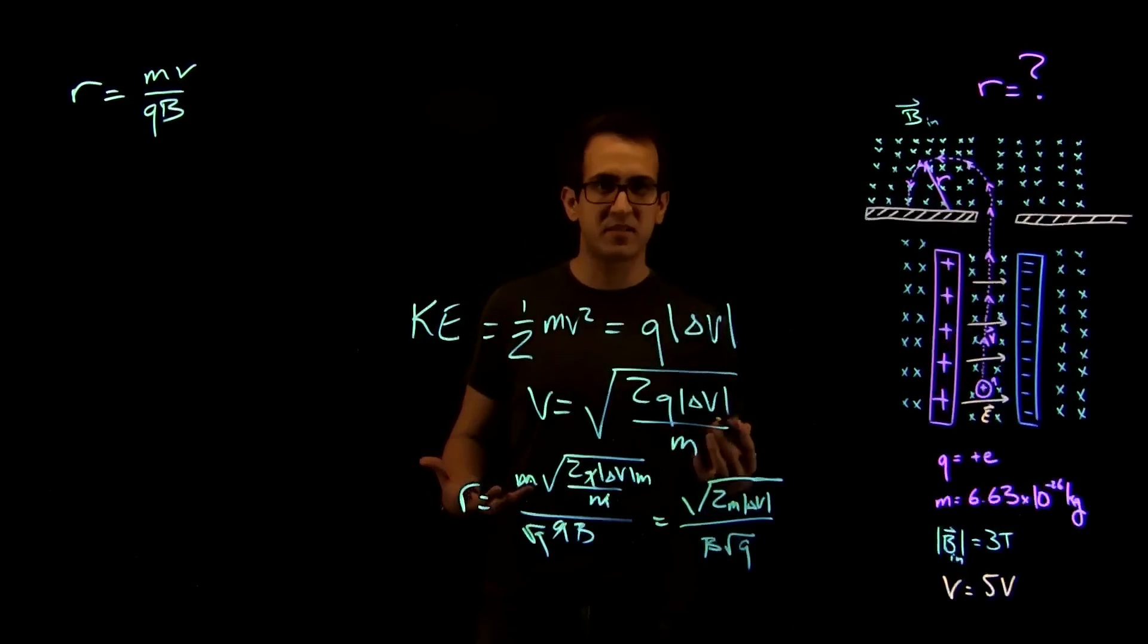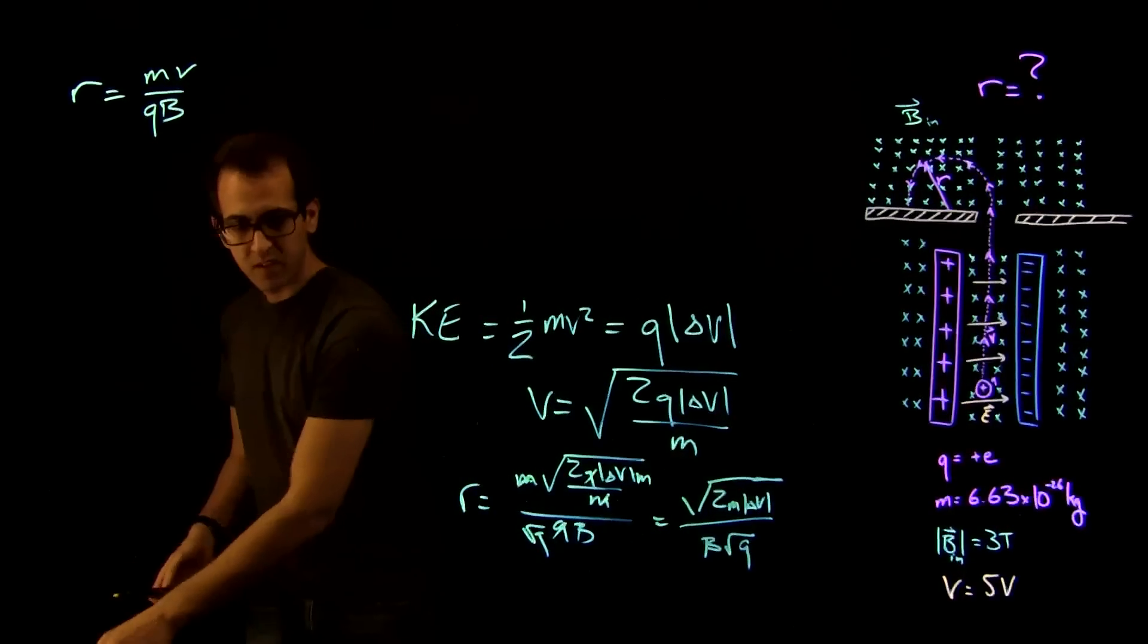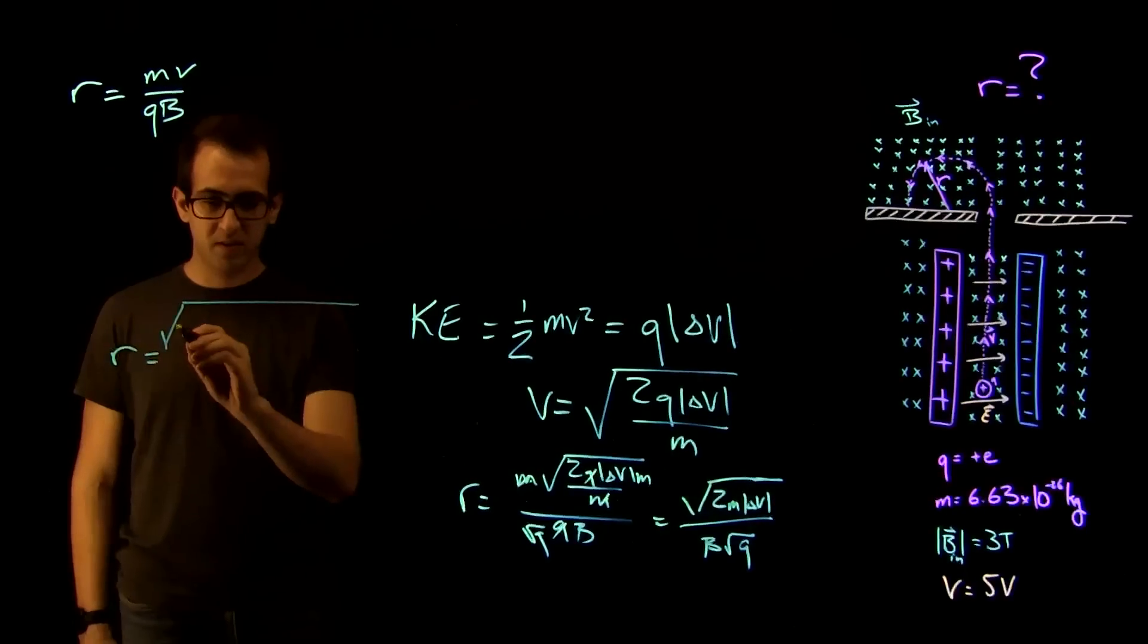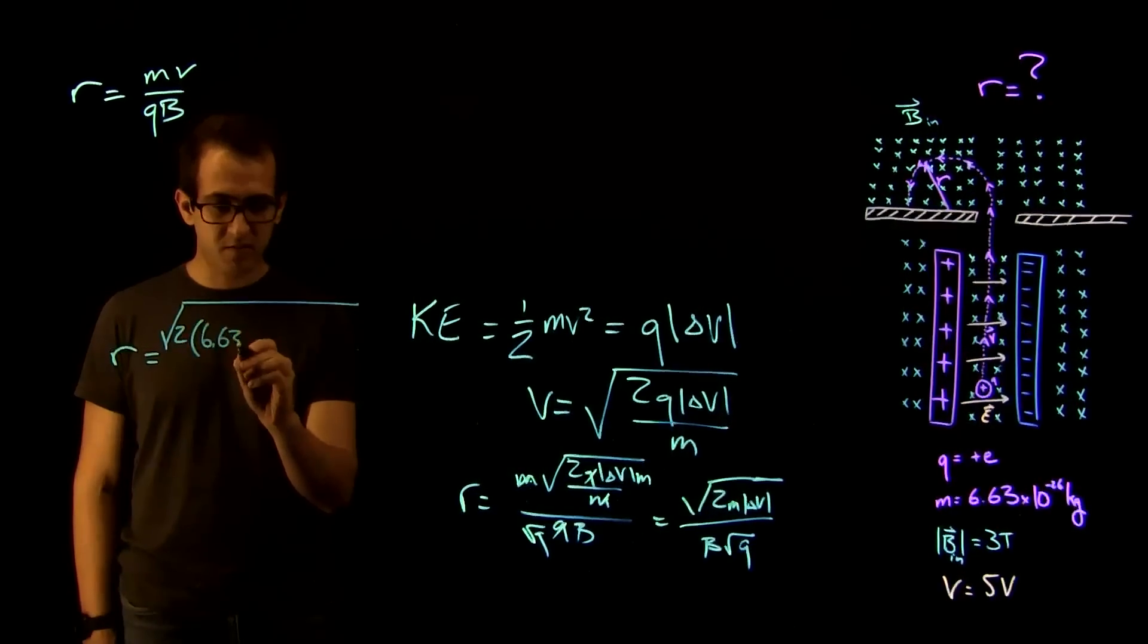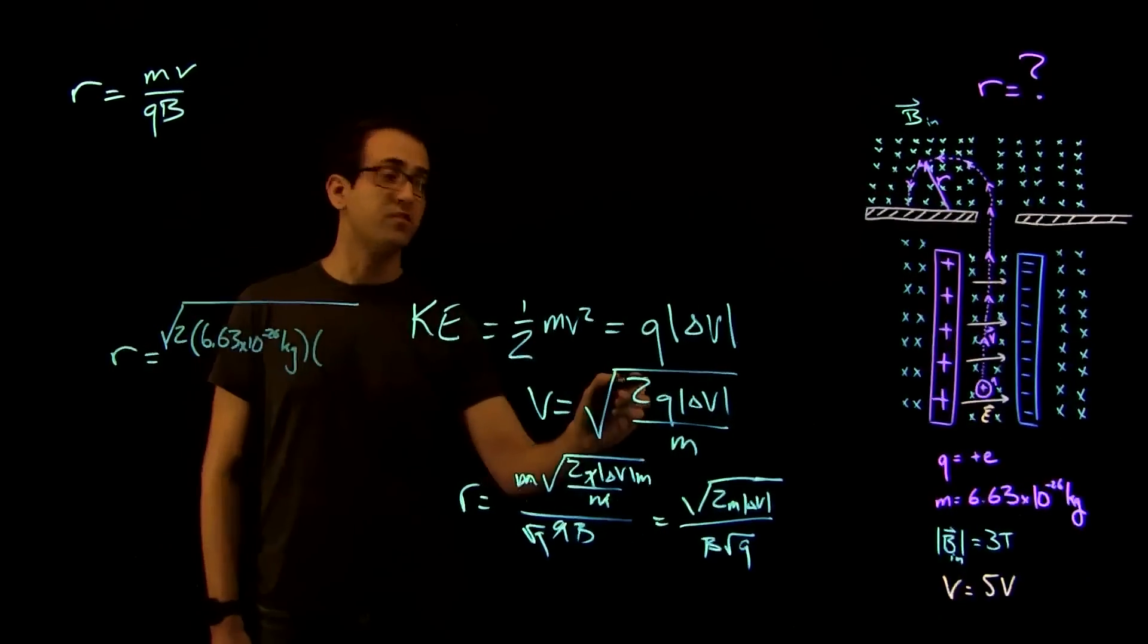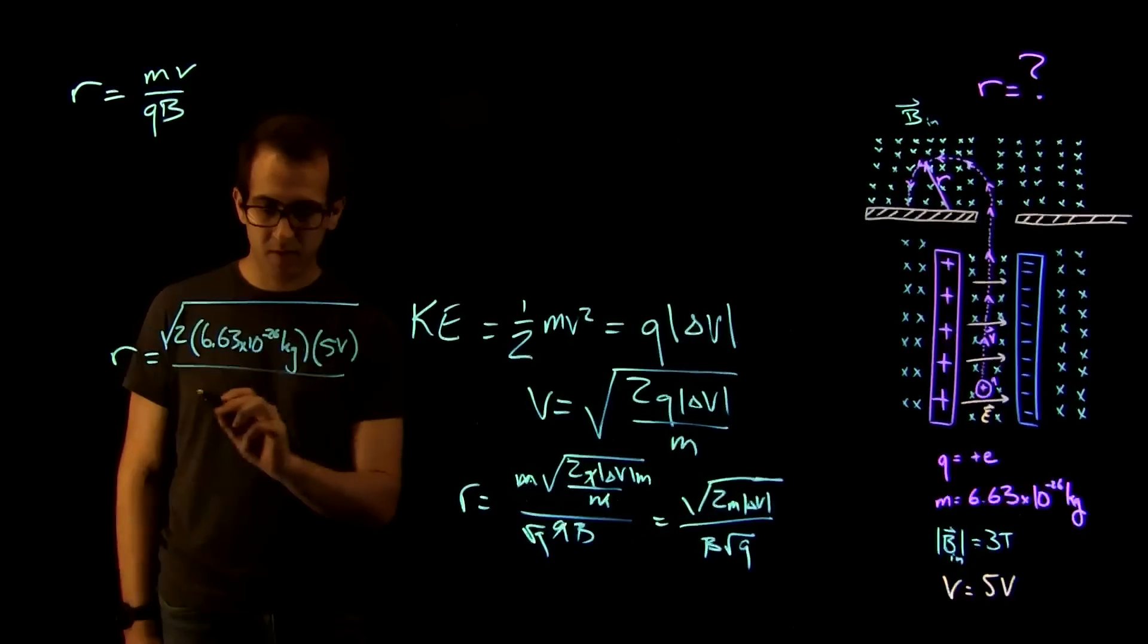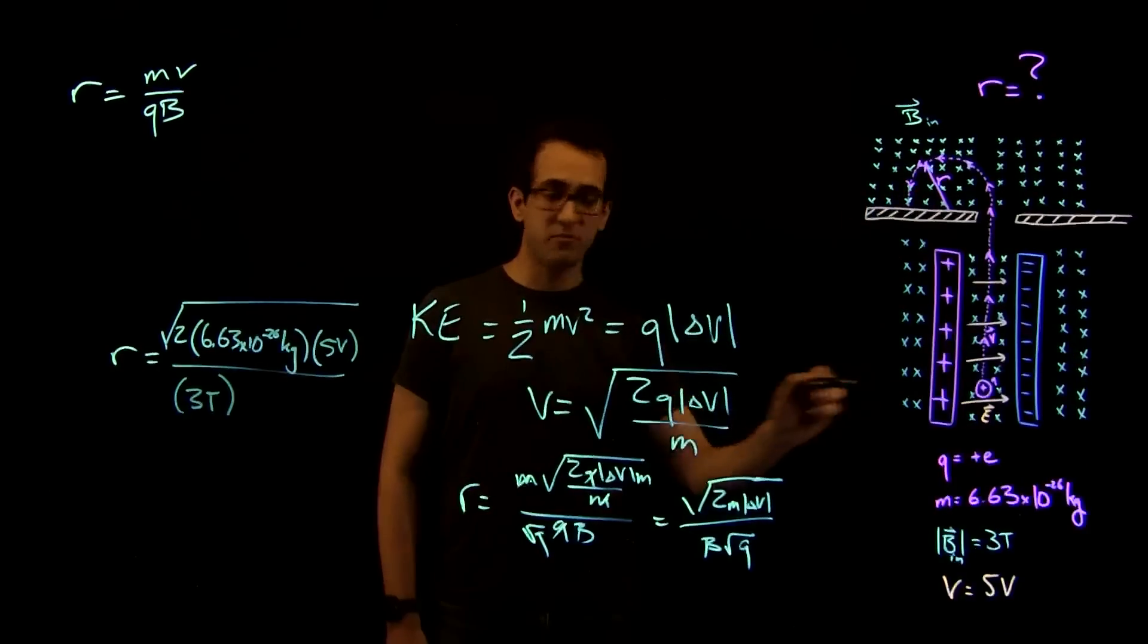That's the simplest form we're going to find. We can plug in what we know now. So let's do that over here. We know that R is equal to square root of 2 times 6.63 times 10 to the minus 26 kilograms times delta V. We know that's 5 volts, 5 volts over 3 tesla because that's the B, the magnitude of B there.